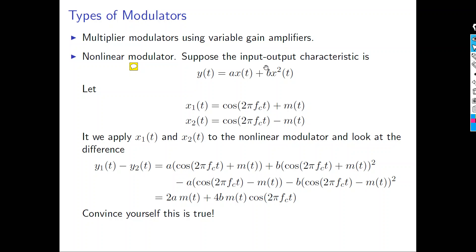The nonlinear modulator is when the function that generates the signal multiplied by the carrier includes a nonlinear equation — anything with square, square root, cubic, or x to some power becomes nonlinear. For example: u(t) = a·x(t) + b·x²(t).